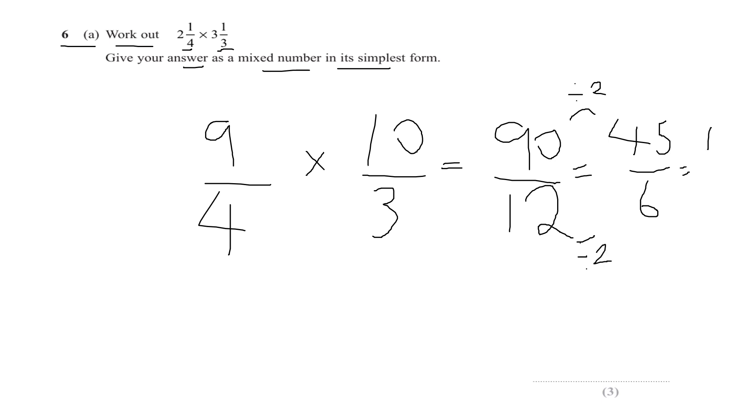Again, if you're not sure, check with the bus stop method. And six divided by three is two. You'll get fifteen halves. So that is an improper fraction. Two into fifteen goes seven times with remainder of one, so the final answer just reads seven and a half. And that was worth three marks.